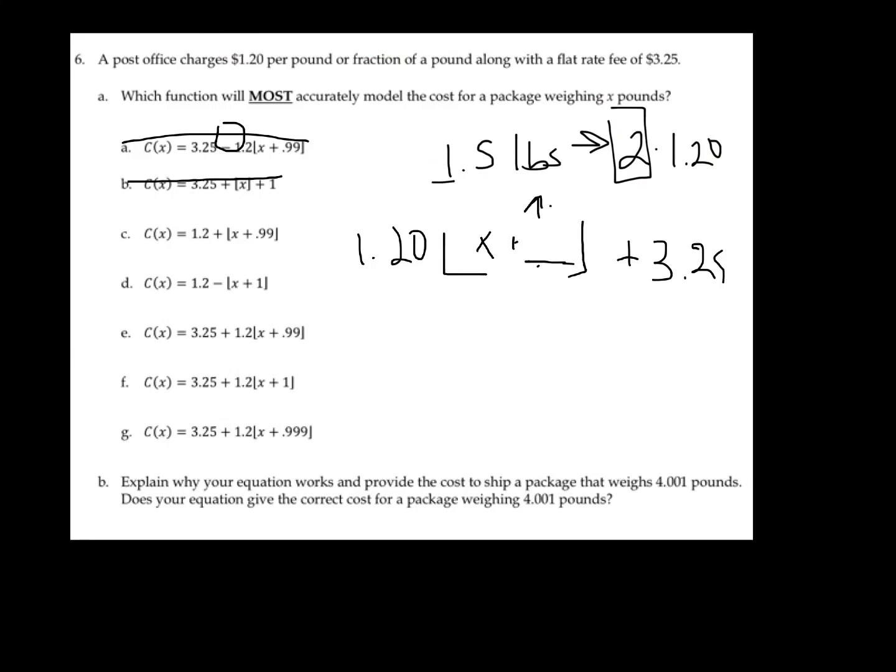C, also not right. There's no flat fee of $3.25 involved. D is pretty confusing as well. There's no flat fee of $3.25. E is interesting. We have the flat fee of $3.25, and we are adding in 1.2 times some sort of what looks to be a floor function that might round up. So we're going to leave E as a potential possibility.